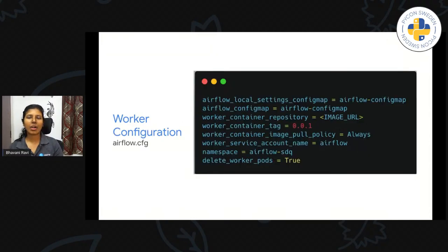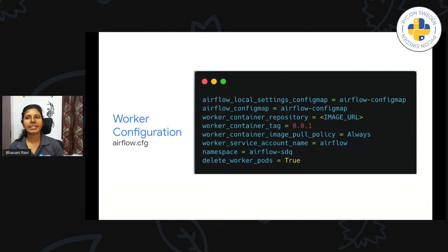How do you configure your workers? Airflow has a configuration file with a lot of configuration settings. You have to specify that you're going to use a Kubernetes executor. You need to mention what Docker image you're going to use, what the tag is, how often you want to pull it, and whether any authentication is required to pull the image. All of these are in a configuration file — you just define them.